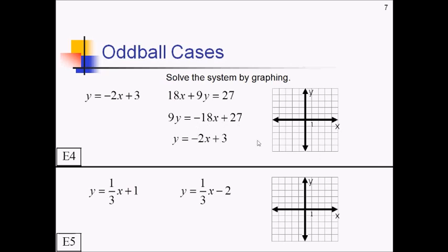And graphing these out, we've got y-intercept of 3, slope of negative 2, so down 2 over 1. There's that first line. And, oh, wait a sec. Y-intercept of 3, slope of down 2 over 1.